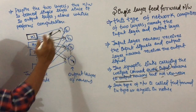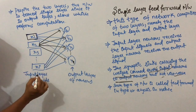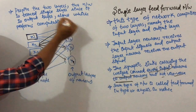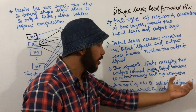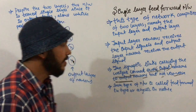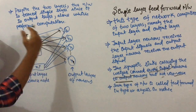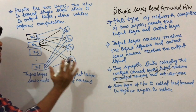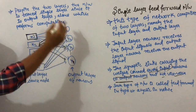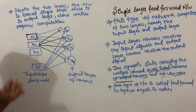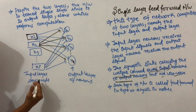Every input neuron is connected to every output neuron, but not vice versa — output layer neurons are not connected back to input layer neurons. There are no links from the output layer to the input layer. Such a network is called a feed forward network, and is acyclic in nature. If there were any connections from the output layer back to the input layer, it would be a cyclic graph.